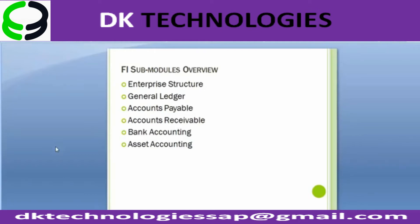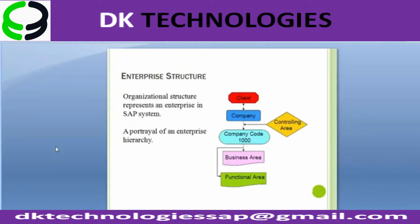The course content is divided into FI and CO. In the FI sub-module overview it includes enterprise structure, general ledger accounting, accounts payable, accounts receivable, bank accounting, and asset accounting. The enterprise structure represents an enterprise hierarchy in the SAP system, including client, company, company code, business area, and functional areas.